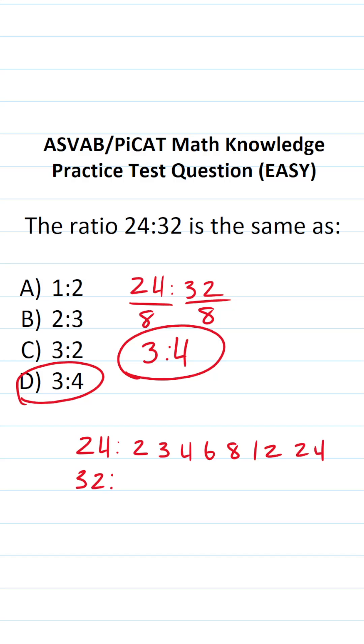And the factors of 32, which are going to be 2, 4, 8, 16, and 32. And then you could have said, well, the greatest factor they have in common is 8.